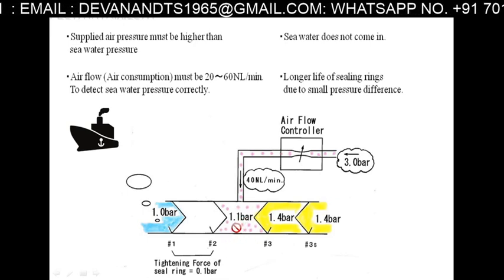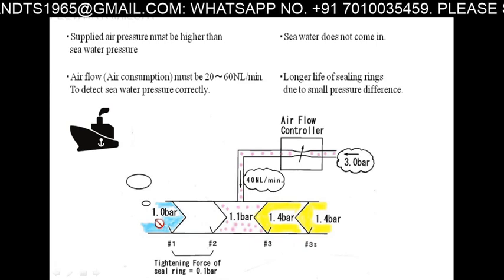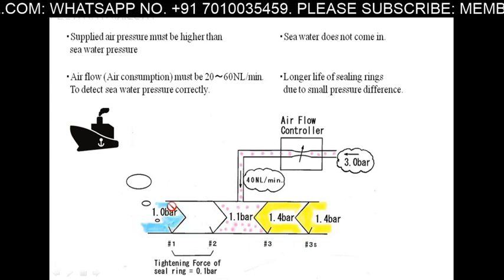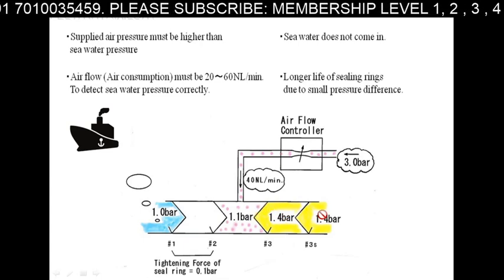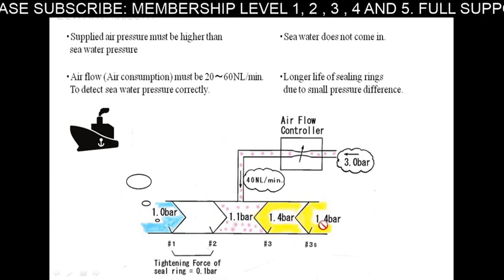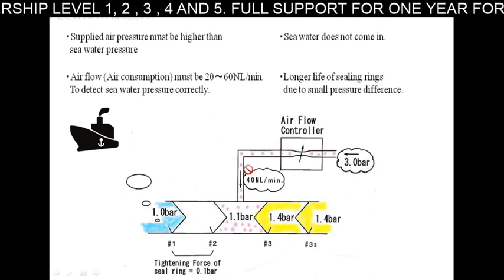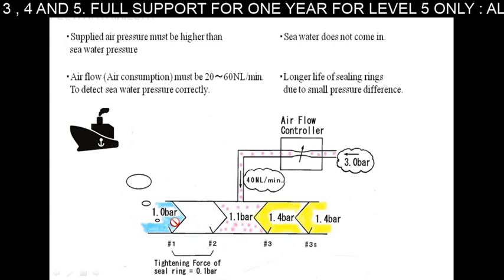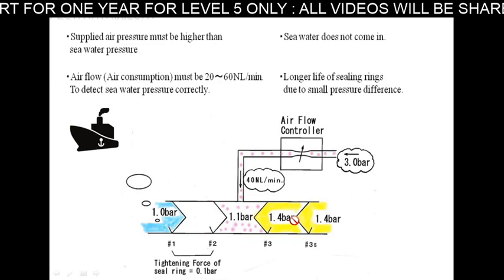We maintain 1.1 bar air pressure while sea water pressure is 1 bar. The oil pressure, shown in yellow, is at 1.4 bar. We give controlled air pressure through the system to keep water from coming in and oil from going out — that is the whole purpose.